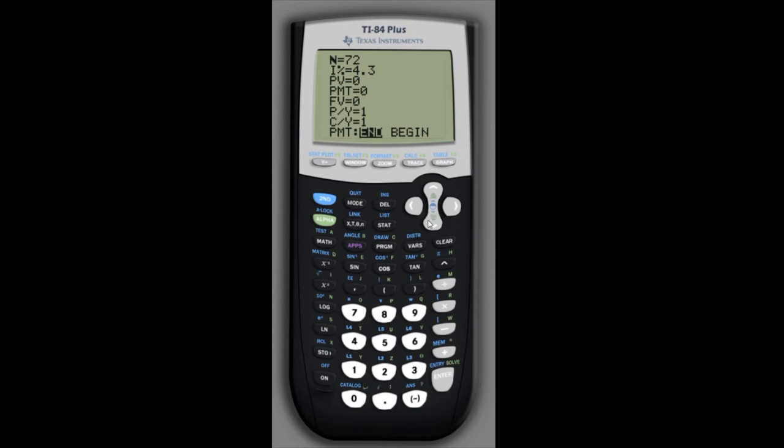FV stands for future value, and that is the piece that we're given, so we know the future value is 5,000. And the next two lines stand for payments per year and compounding per year. In our case the interest is compounded monthly, so we'll type in 12 for both of these.